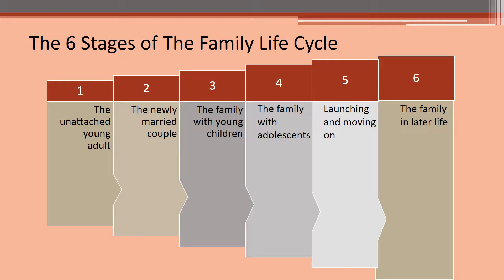Carter and McColdrick identified six stages in the family life cycle. They noticed there are differing challenges and differing problems within each stage. One is the unattached young adult. Two, the newly married couple. Three, the family with young children. Four, the family with adolescents. Five, the launching and moving on stage. And six, the family in later life.